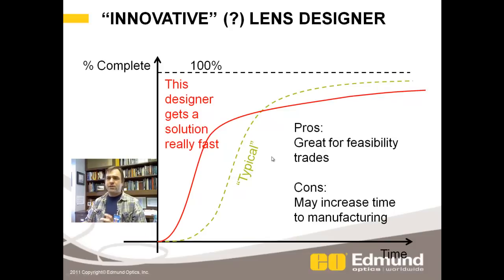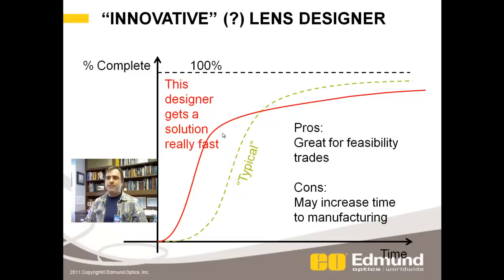Now let's talk about the innovative lens designer. This designer gets to a solution really, really fast — they understand how to balance aberrations and how many elements they need, so they can get to a design solution very quickly. When you're doing a feasibility trade, this is awesome. The downside may be that if a lot of attention isn't paid to making it manufacturable, you could end up spending a lot more time getting it through to manufacturing.